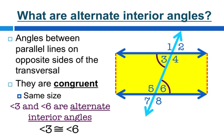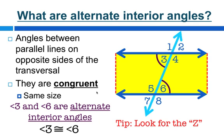So angle 3 is congruent to angle 6. This symbol — a little equal sign with a squiggle on top — means congruent. A good tip is to look for the Z outline. When you take one parallel line, then travel along the transversal, and then go along the other parallel line, that forms almost a Z shape, or a zigzag. So that will help you find the alternate interior angles.